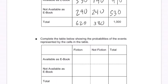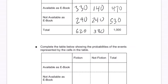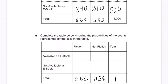Complete the table below showing the probabilities of the events. The total is always going to be 1. We just go around and divide each number by 1,000 from our previous table to finish the problem.